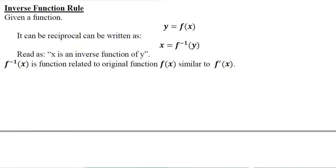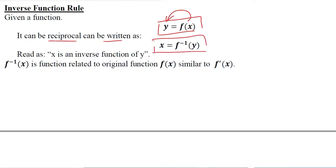Let us try to understand a situation where we are to differentiate a function and an inverse function exists. This can be better understood if we take a general example of this function. This is a simple function that tells that x is determining y. Now if I try to calculate the reciprocal of this function, I will get this, which is self-evident that x is still kept there and the function symbol is shifted to the other side.